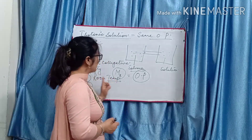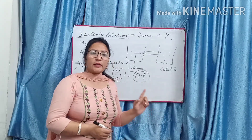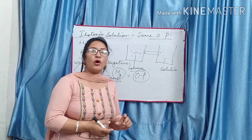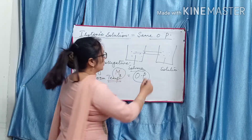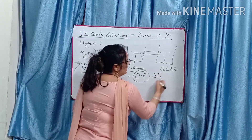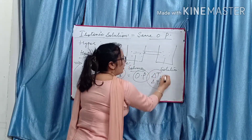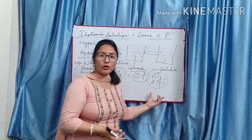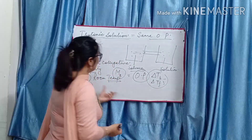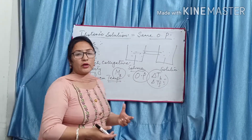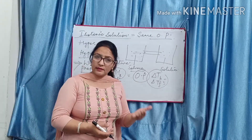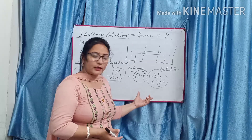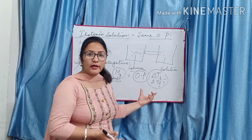Dilute solution ke time pe jo elevation hai, depression hai, unki jo value hoti hai woh bahut kam hoti hai. Lekin jo osmotic pressure hai, uski value zyada hoti hai. Isliye yeh preferred hoti hai. So osmotic pressure is the best colligative property. Third reason: other formulas - elevation, relative lowering - mein molality use karte hain. Lekin osmotic pressure mein pi = CRT use kiya, where C is molarity - number of moles per unit volume. So instead of molality, molarity is used.